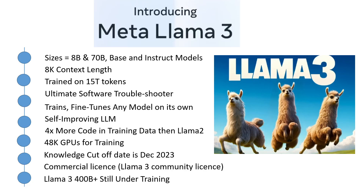The 8B and 70B models are just the beginning — their largest model is over 400 billion parameters and is still under training. The team is excited about how these larger models are trending. They will be releasing multiple models with new capabilities, including multi-modality, the ability to converse in multiple languages, a much longer context window, and stronger overall capabilities. They will also release the model weights alongside the research paper.